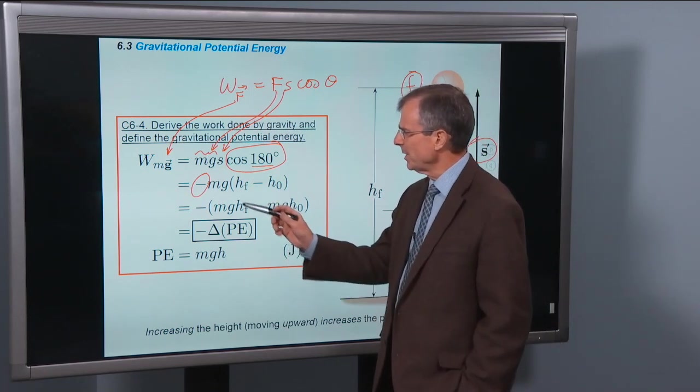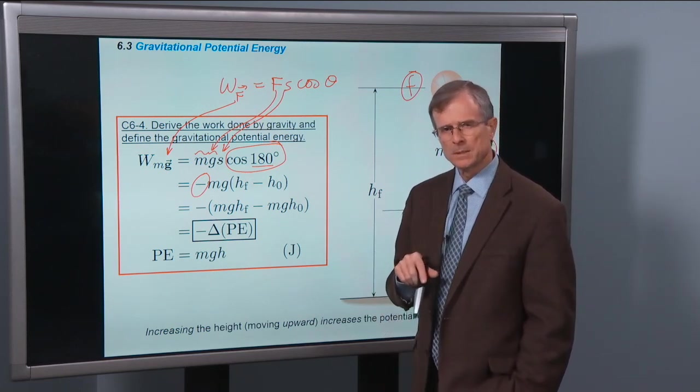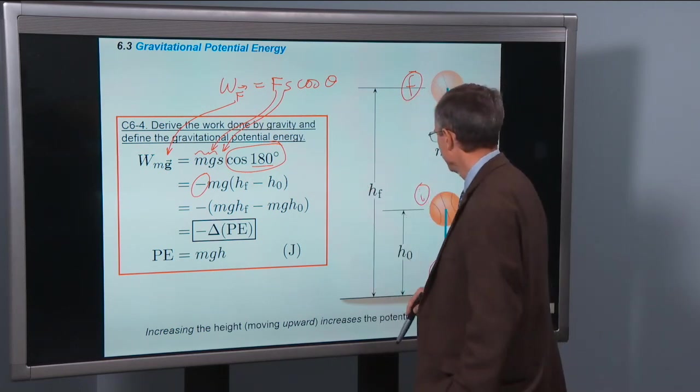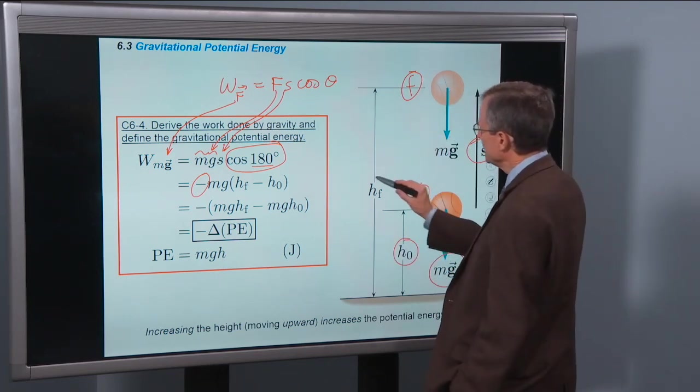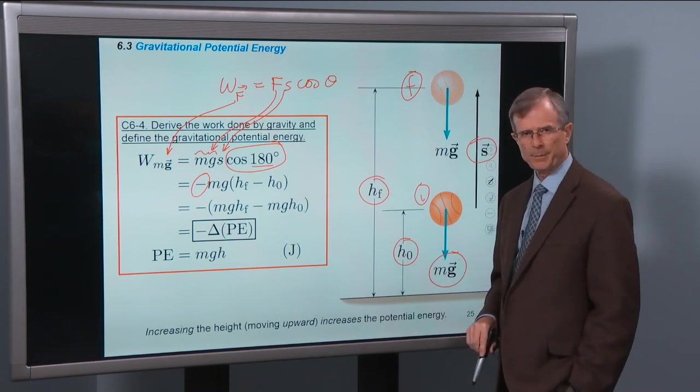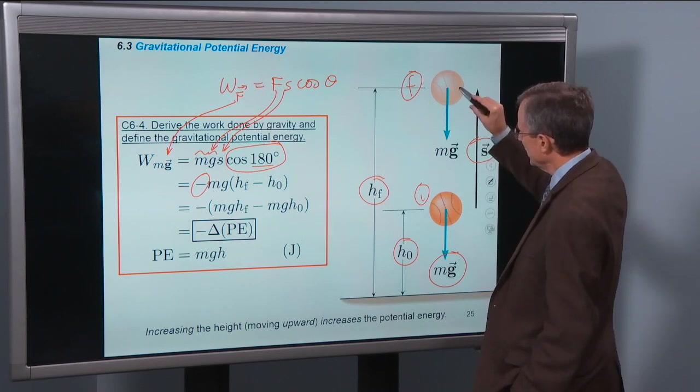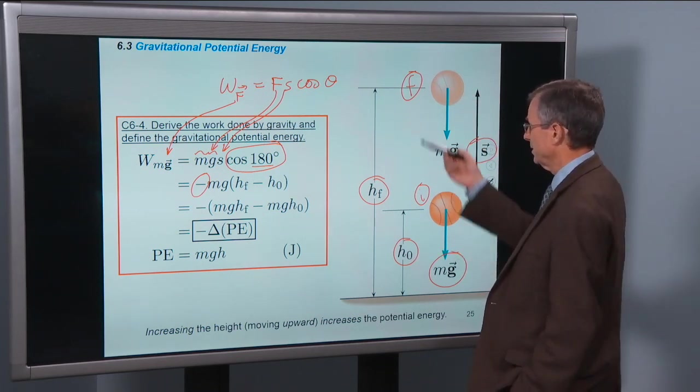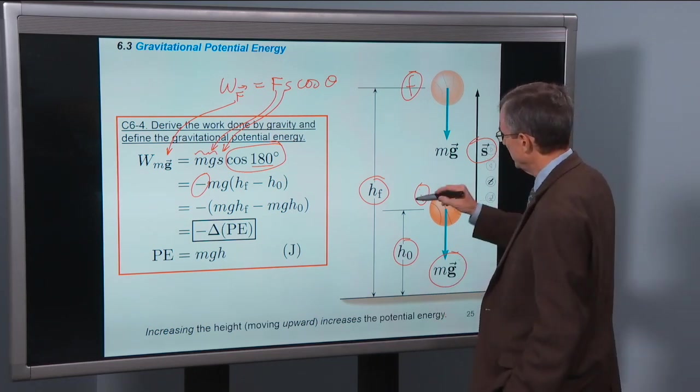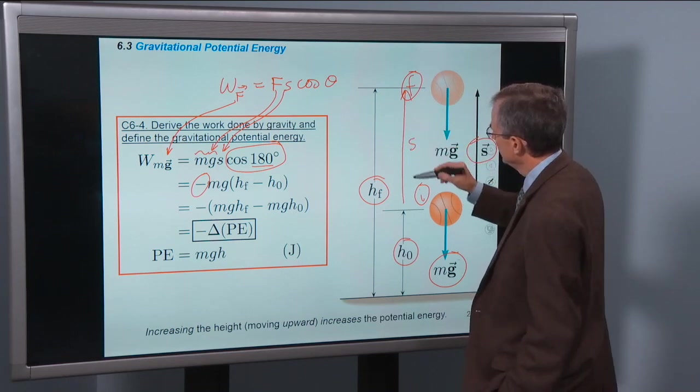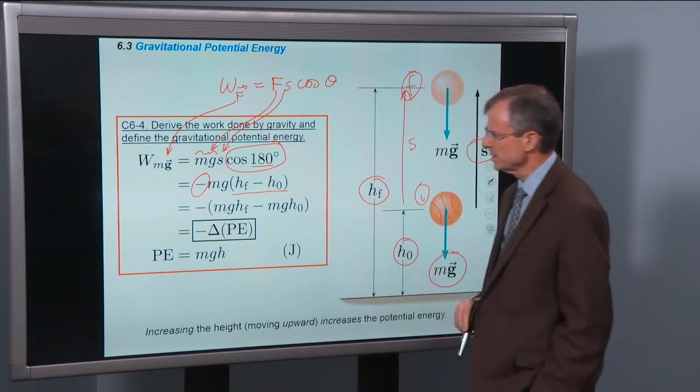M and g come along for the ride. What's s? Well s is the distance from the initial to the final position. Here's the initial height of the basketball. Here's the final height of the basketball. What is the distance between the initial position and the final position? And you say, well isn't it just the final height minus the initial height? And I say, sure enough. This distance here is just the final height minus the initial height. And that's what we have here. So there's our s.